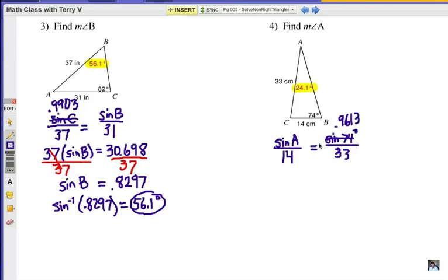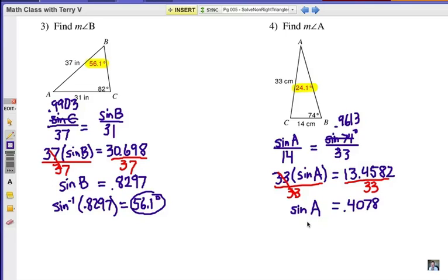Now we're going to cross multiply. Now we want to divide both sides by 33. So sine A equals 0.4078, rounded to four significant digits. How do we find the actual angle measure? That's right, that's the inverse sine. So we would write it as sine minus 1 of that decimal value, 0.4078.